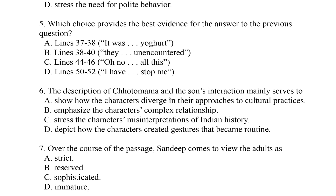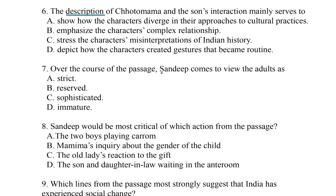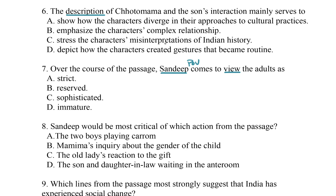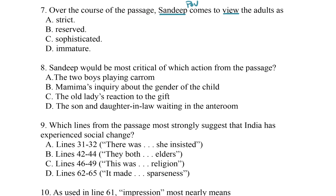Question six: the description of Chotomama and the son's interaction mainly serves to... This is going to be a question about the purpose of the description of something — a craft question. So we're going to do a close read when Chotomama and the son interact. Question seven: over the course of the passage, Sandeep comes to view the adults as something. The word 'view' signals to me that this is going to be a point-of-view question. Because we know from the blurb that Sandeep is probably the protagonist, we're going to be looking for the way his point of view changes or an opinion that he expresses.